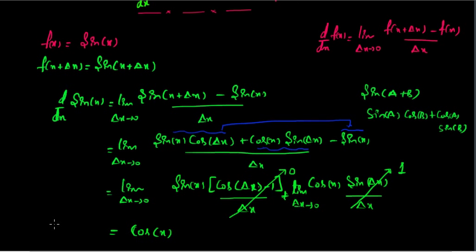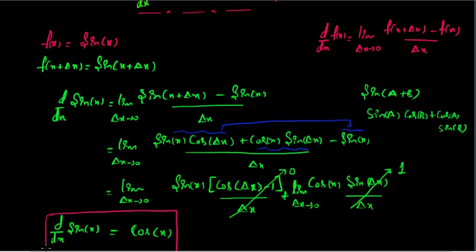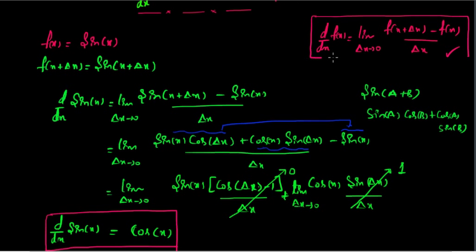So, now we have shown d by dx of sin of x is cos x. This is the resultant proof by using the basic formula, based on the basic definition. Thank you for watching.